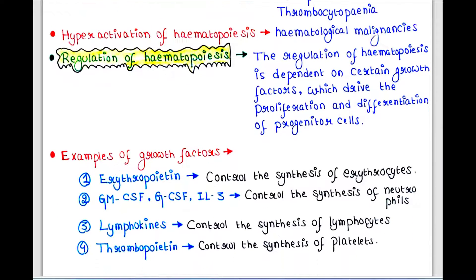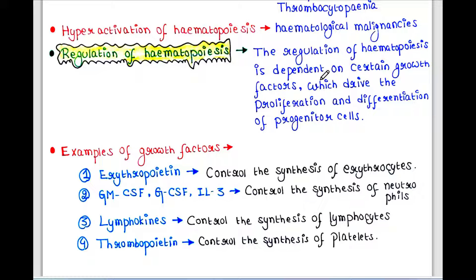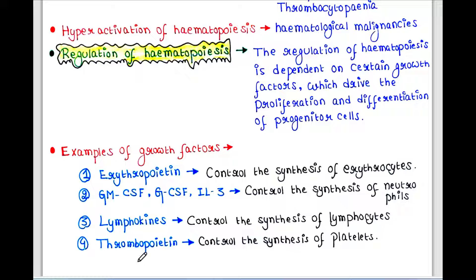The regulation of hematopoiesis is dependent on certain growth factors which drive the proliferation and differentiation of progenitor cells. Examples include: erythropoietin, which controls the synthesis of erythrocytes; GM-CSF and G-CSF (colony stimulating factors); and interleukin-3, which controls the synthesis of neutrophils. Lymphokines control the synthesis of lymphocytes, and thrombopoietin controls the synthesis of platelets.